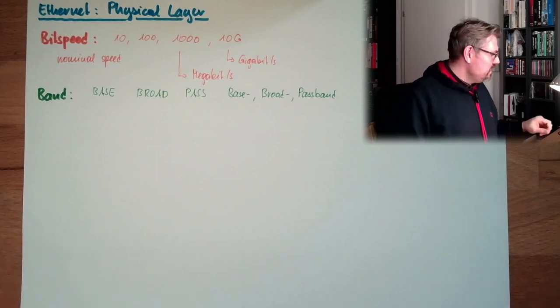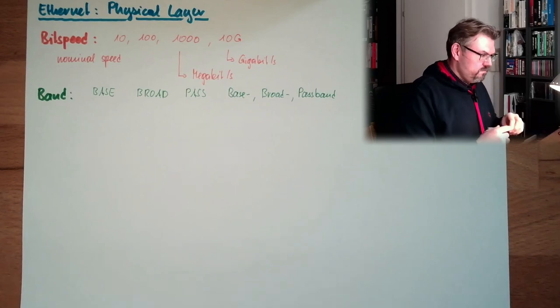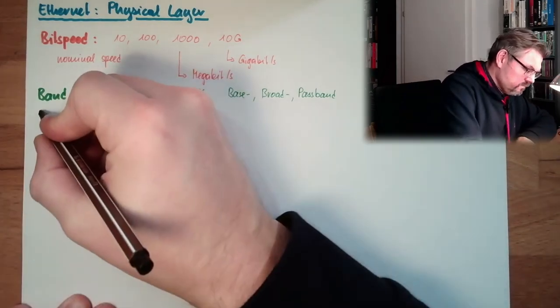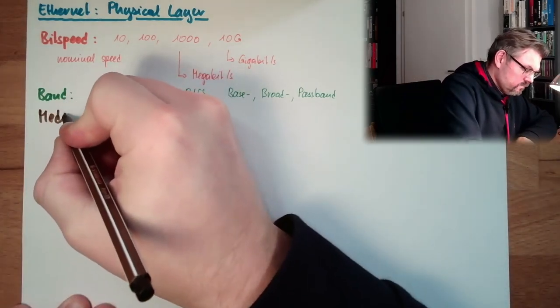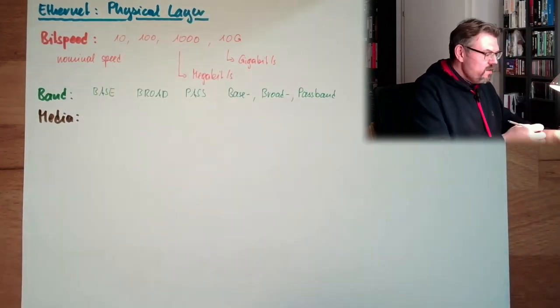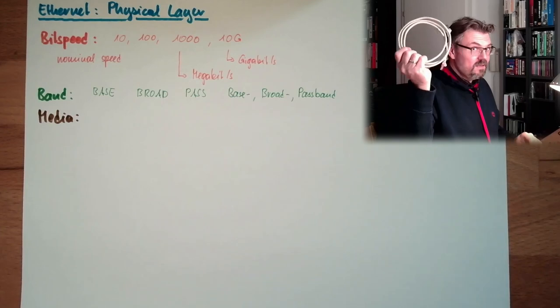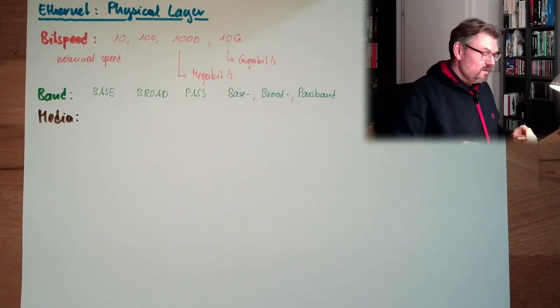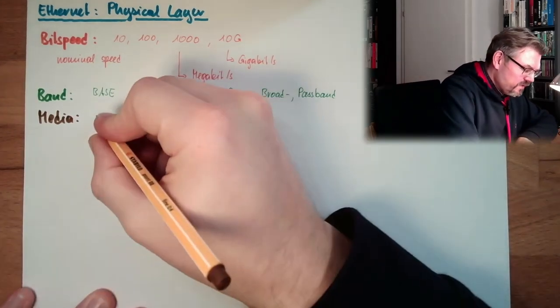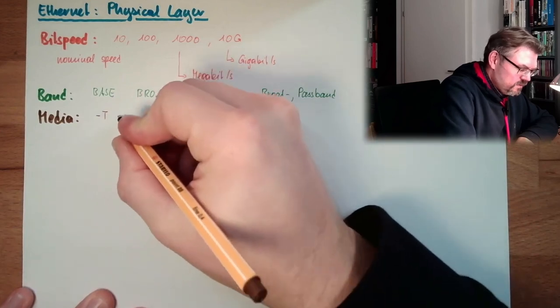And then we have the medium, media. Usually right now, usual is this cable. This cable is usually marked with T, twisted pair.